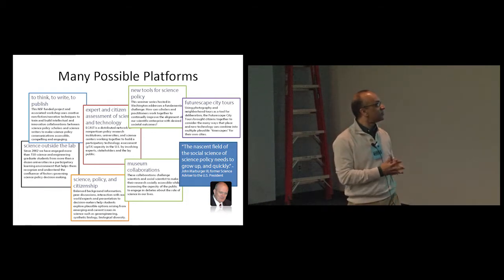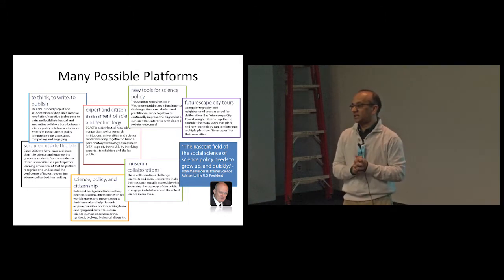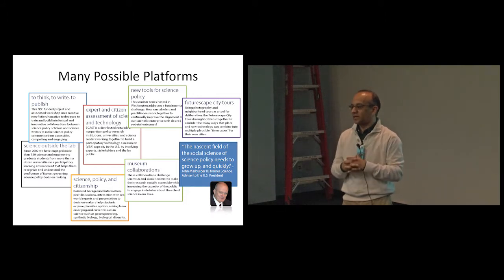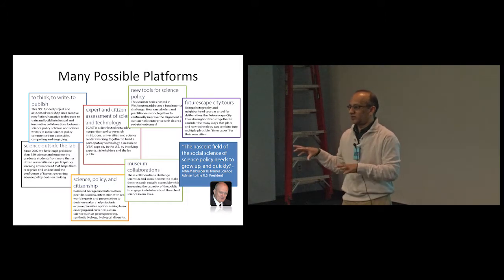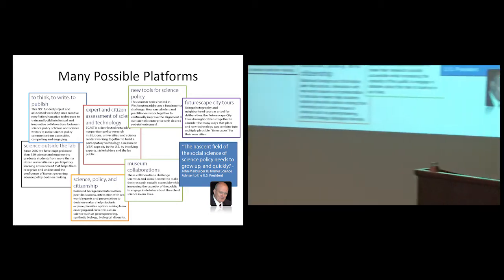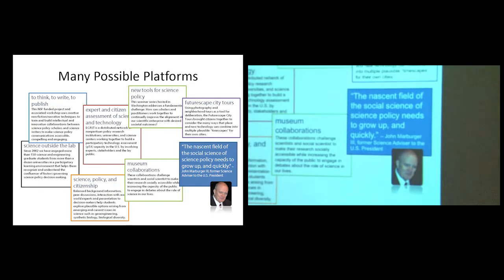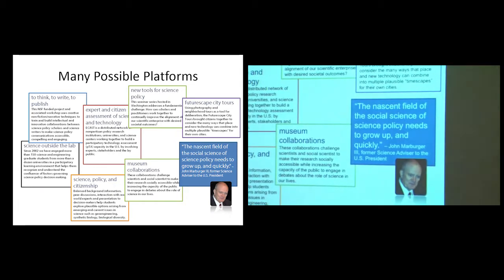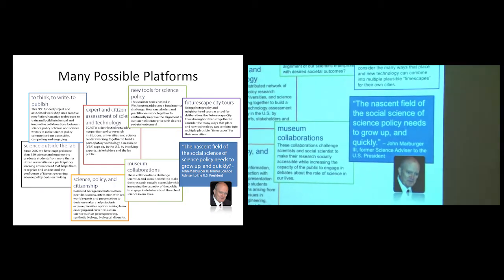Obviously we talked about museum collaboration. In the participatory technology assessment space, we have created a network — we're calling it Expert and Citizen Assessment of Science and Technology, the ECASTS network. It's where we are leveraging universities, nonprofit think tanks, and science museums to have conversations about complex issues. We had a citizen consultation meeting on biodiversity in four US sites in 2012 that was conveyed to the UN.